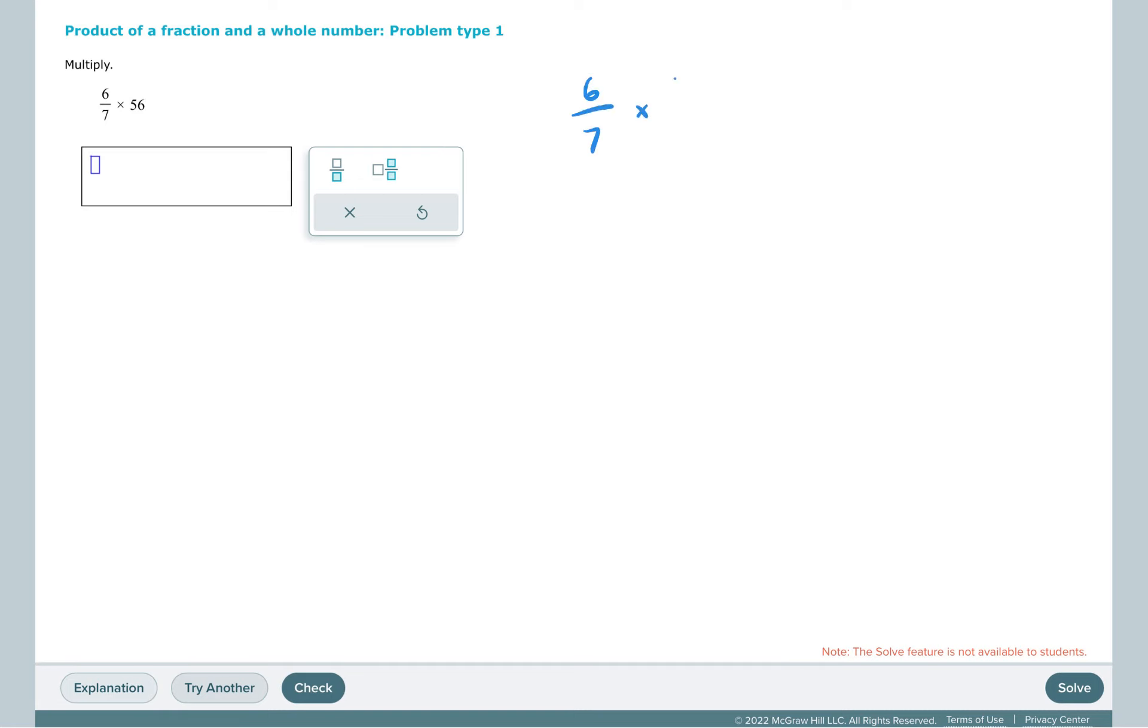6 sevenths times 56 would be 6 sevenths times 56 over 1. 6 times 56, 7 times 1. This is an example of one where you really do want to cross-simplify, because if you did not cross-simplify, you'd be doing 6 times 56 and then dividing it by 7.